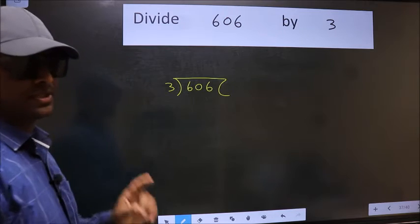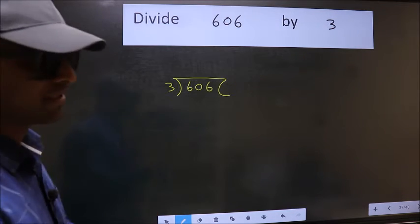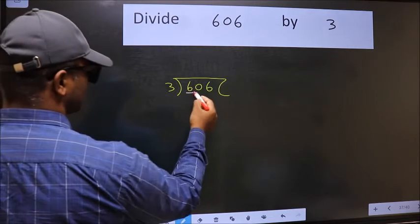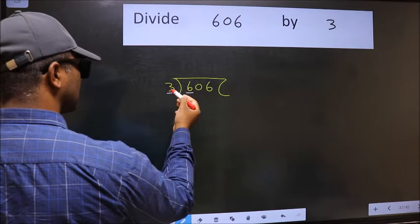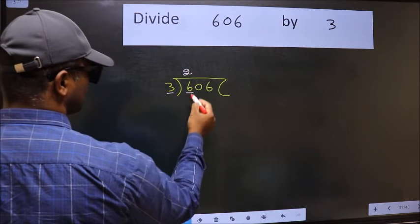This is your step 1. Next, here we have 6 and here 3. When do we get 6 in the 3 table? 3 twos are 6.